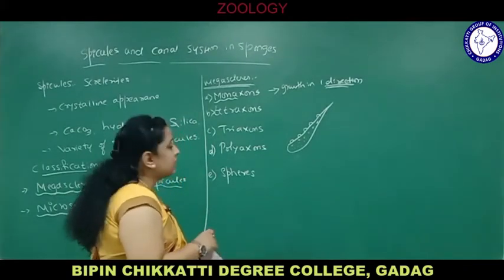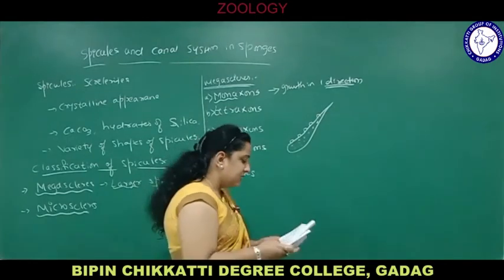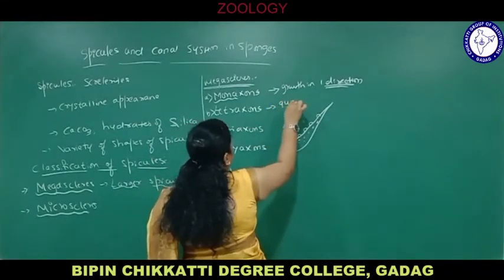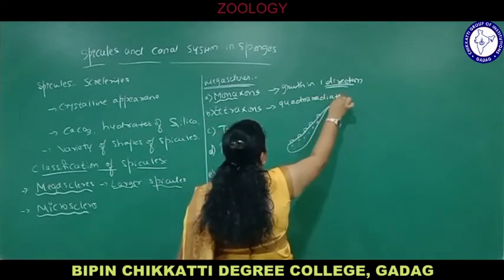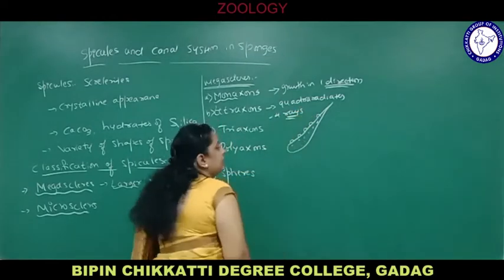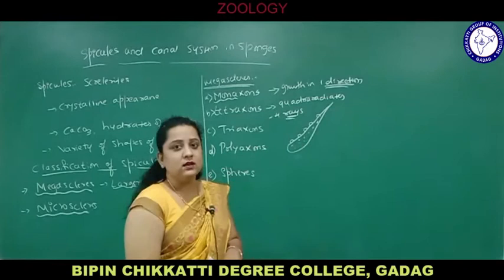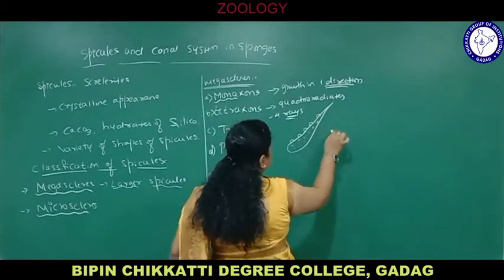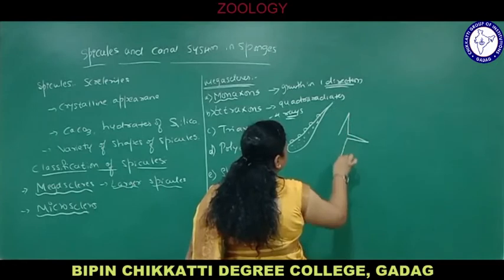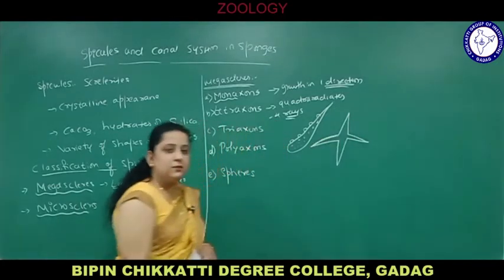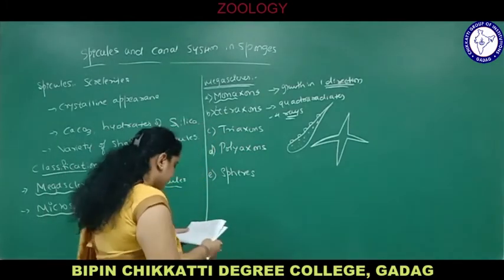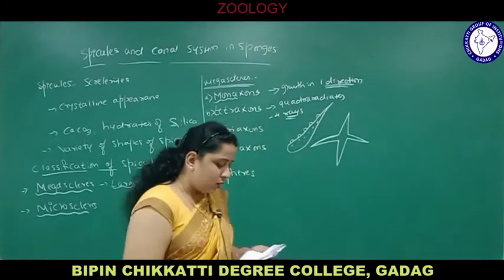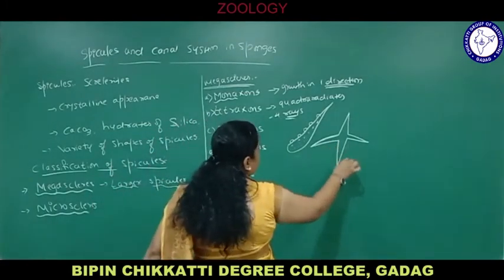Second is tetraaxons. Tetra means four; they are also called tetraactins or quadra-radiates. They consist of four rays not in the same plane, radiating from different planes passing through the center. They may be more or less equal in length.